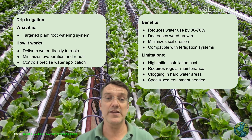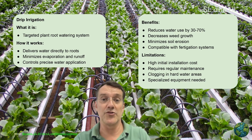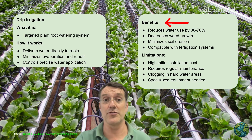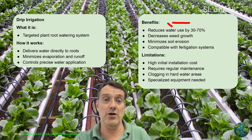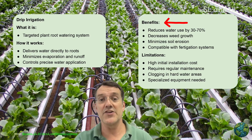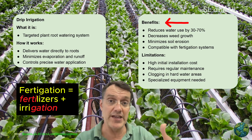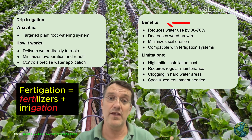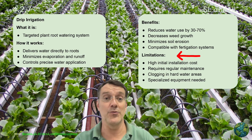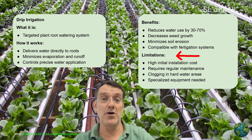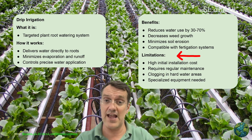Drip irrigation delivers water directly to plant roots through a network of tubes, emitters, and valves. This targeted approach minimizes evaporation and runoff while controlling precise water application. Benefits include reducing water use by up to 70 percent compared to conventional flooding methods, decreasing weed growth by targeting water placement at desired plants, minimizing soil erosion, and compatibility with fertigation systems that deliver nutrients along with irrigation water. Limitations include high initial installation costs, regular maintenance requirements, and clogging issues — particularly in areas with hard water that has high mineral content.